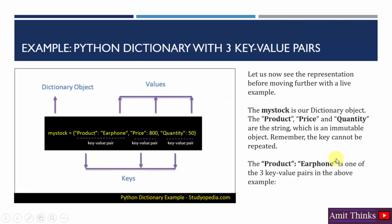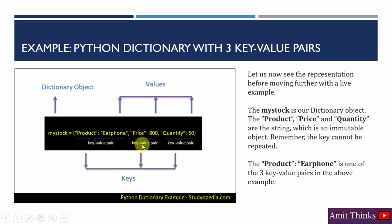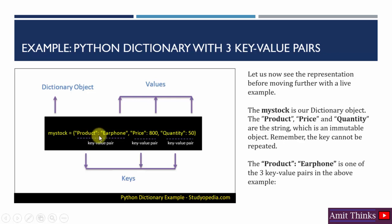Let's see an illustration. 'my_stock' is a dictionary object with three key-value pairs. 'product' colon 'earphone' — product is your key. Price is your key, and quantity is your key. The individual values are earphone, 850, and so on. On the left of the colon we have keys and on the right of the colon we have values.